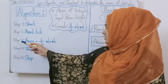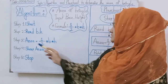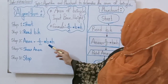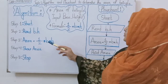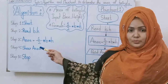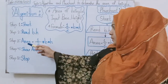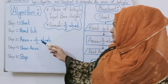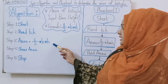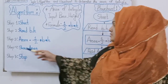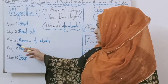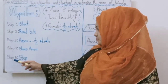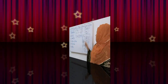Step 3: Apply the area of triangle formula — area equals to half into base into height. Step 4: Show area. Step 5: Stop.